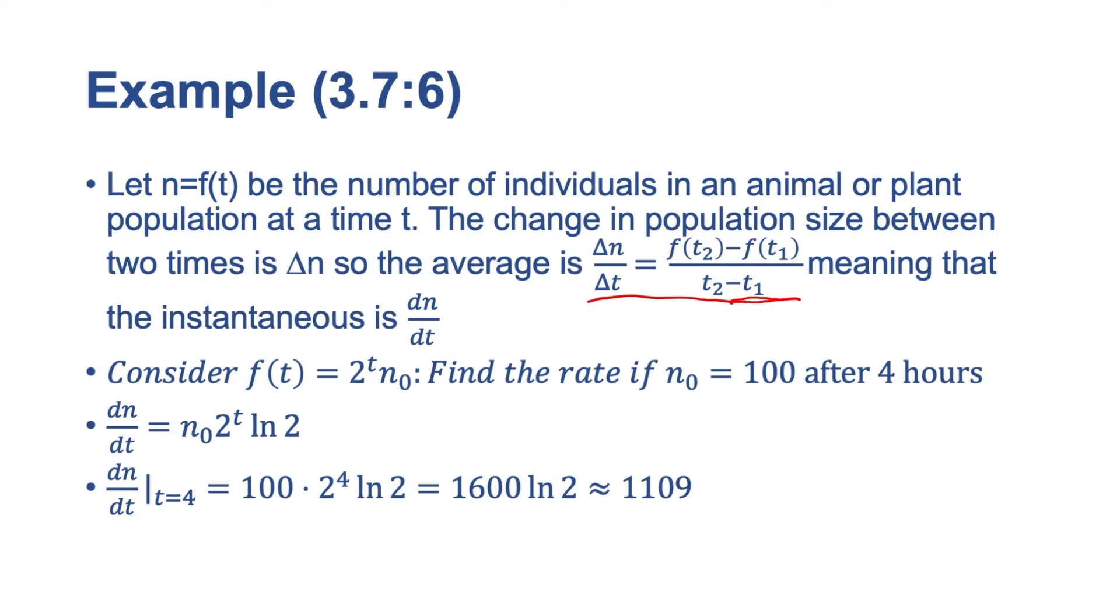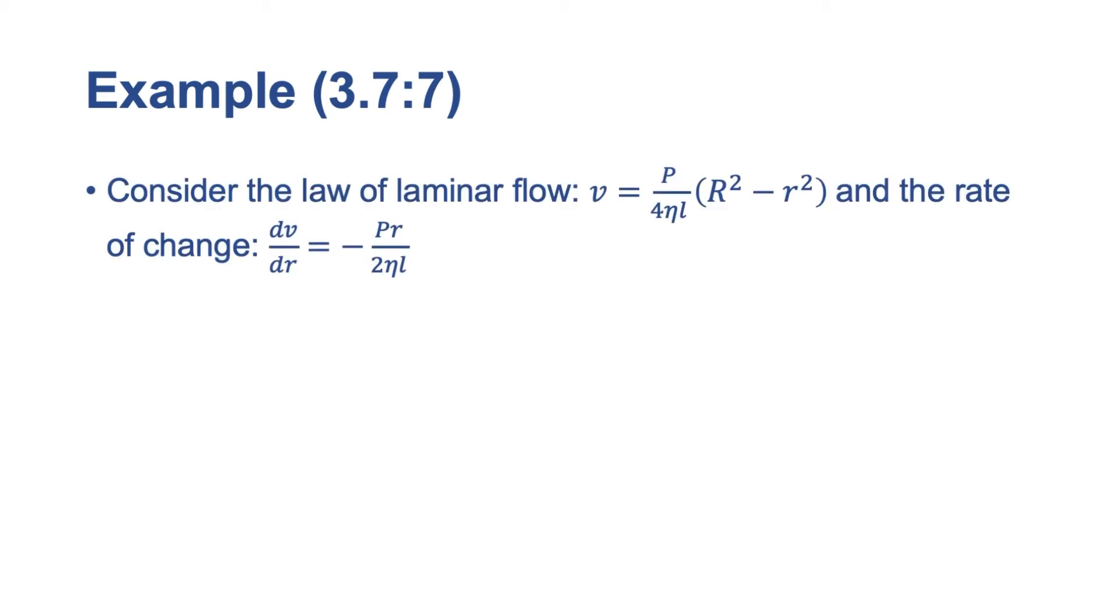Okay, let's do another example. This is going to be example 7 out of James Stewart's calculus, early transcendentals. And we're going to be dealing with laminar flow. So this could be like blood flowing through a vessel here. So consider the law of laminar flow, v equals p over 4 eta l times r squared minus little r squared. And the rate of change is dv dr, and that is equal to negative pr over 2 eta l.